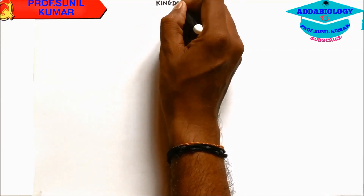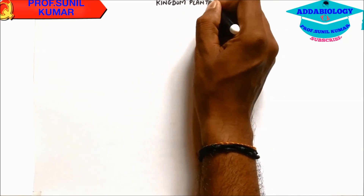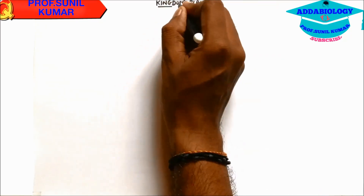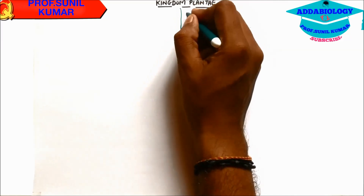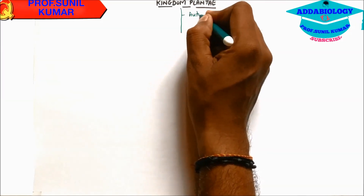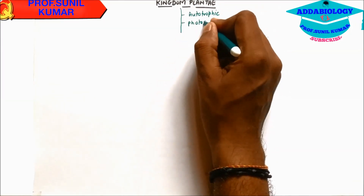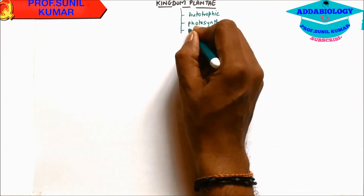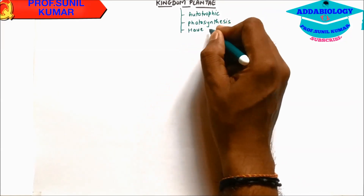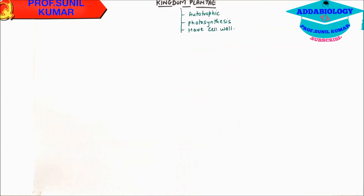Today we are going to focus on one of the most important topics: Kingdom Plantae. For Kingdom Plantae, we need to understand some characteristics of plants. They are autotrophic in nature, prepare food by the process of photosynthesis, and the most important feature is that they have a cell wall.